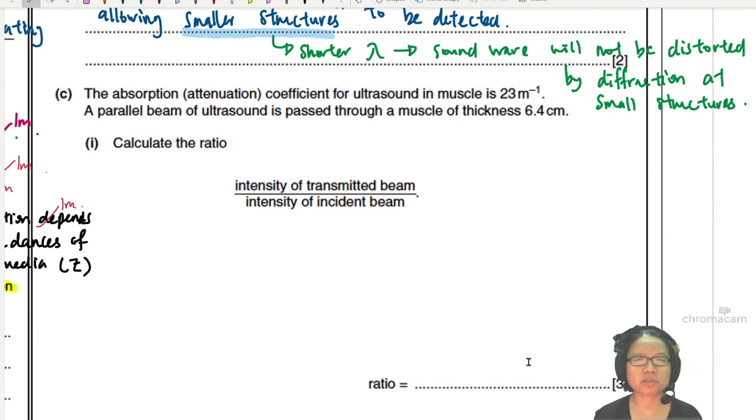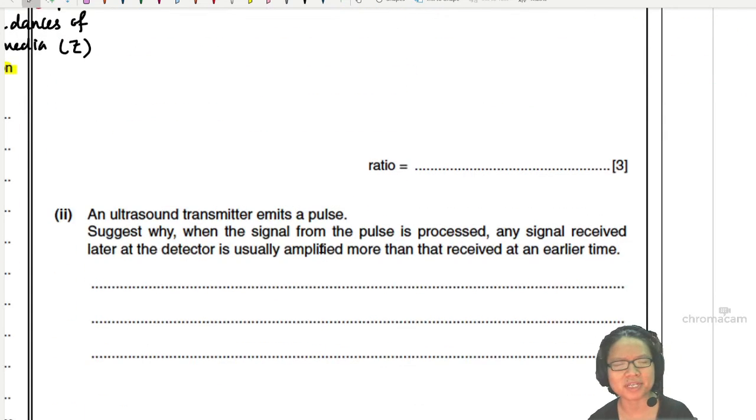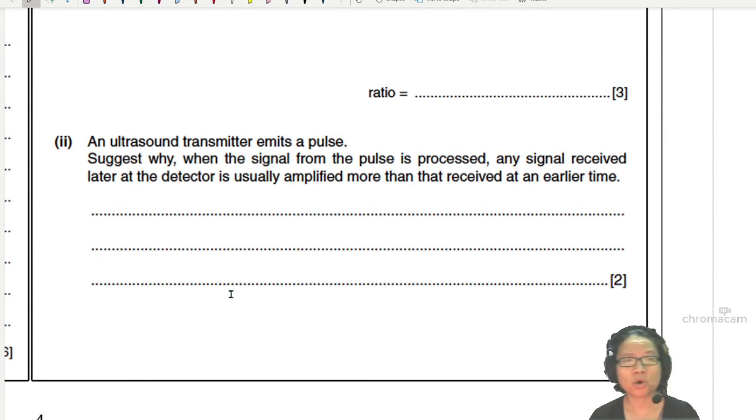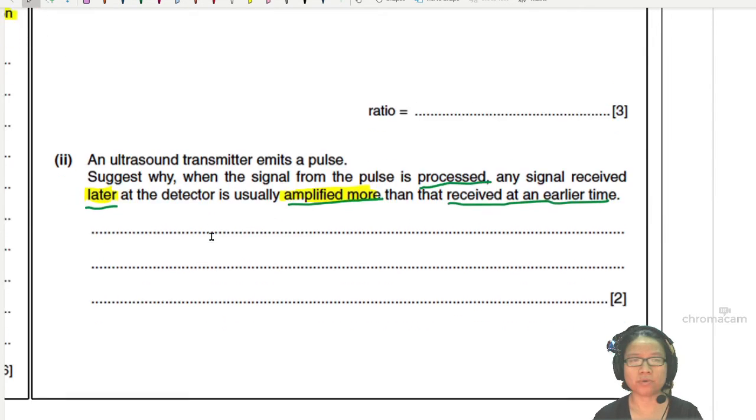Part two, when an ultrasound emits a pulse and the signal from the ultrasound is processed, any signal received later is amplified more than those received at an earlier time. So why later amplified more? Because the later signal got more attenuation, it travels further.